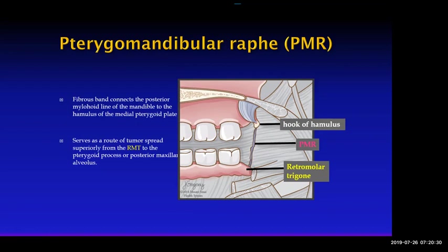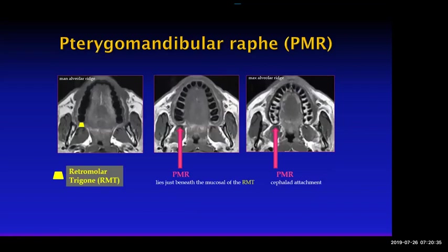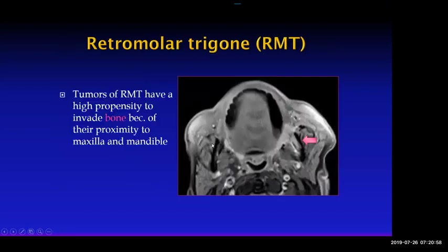The pterygomandibular raphe is a fibrous band connecting the mylohyoid line of the mandible to the medial pterygoid plate, and it serves as a route of spread of cancer from the retromolar trigone to the maxilla. On imaging it's hard to see directly, but you can guess its location. Tumors of the retromolar trigone have a high propensity to invade bone because they're right adjacent to the maxilla and mandible.